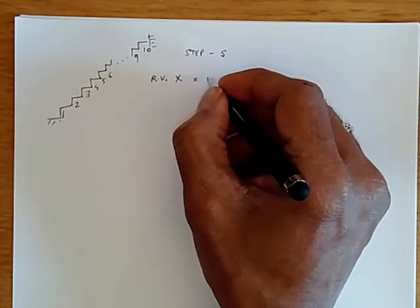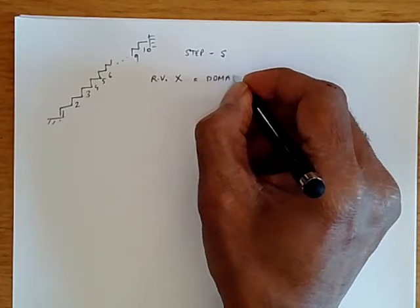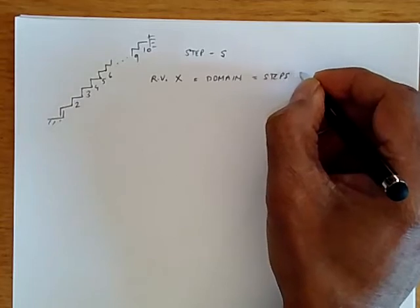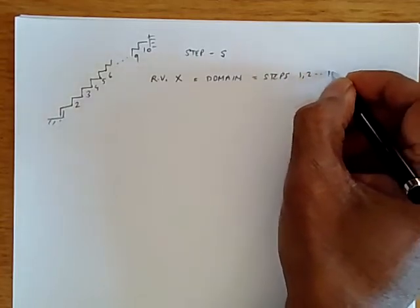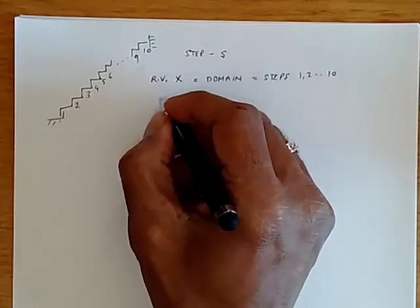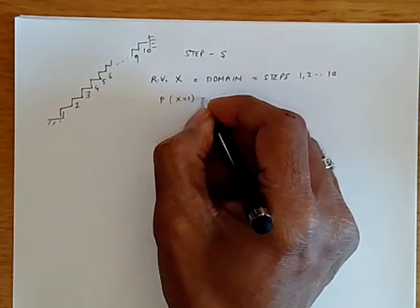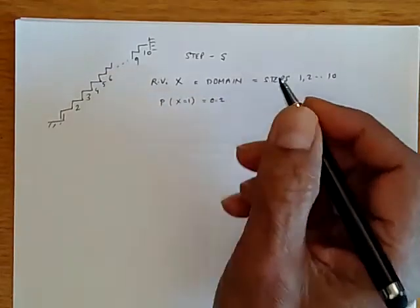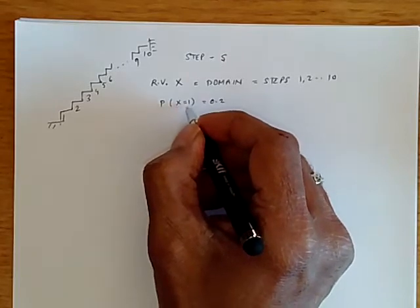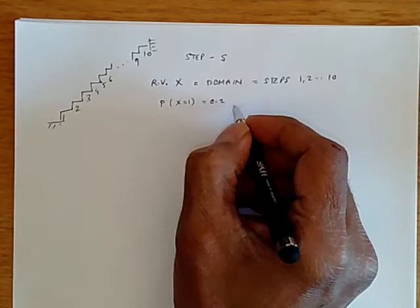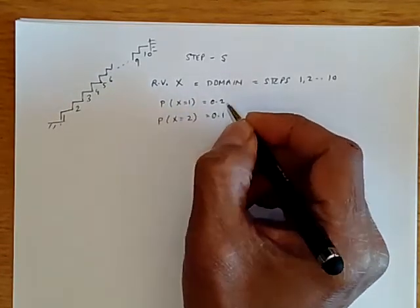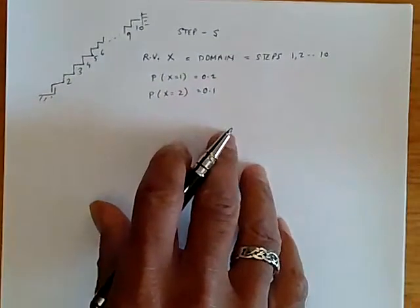For example, in this case, the domain is the steps, which go from one to two all the way to ten. So we don't know what x is exactly, but we know the probability that x equals one equals, let's say, 0.2. And we interpret this as meaning the probability that the random variable x takes on the value one is 0.2. Similarly, the probability that x equals two may be equal to 0.1, et cetera.